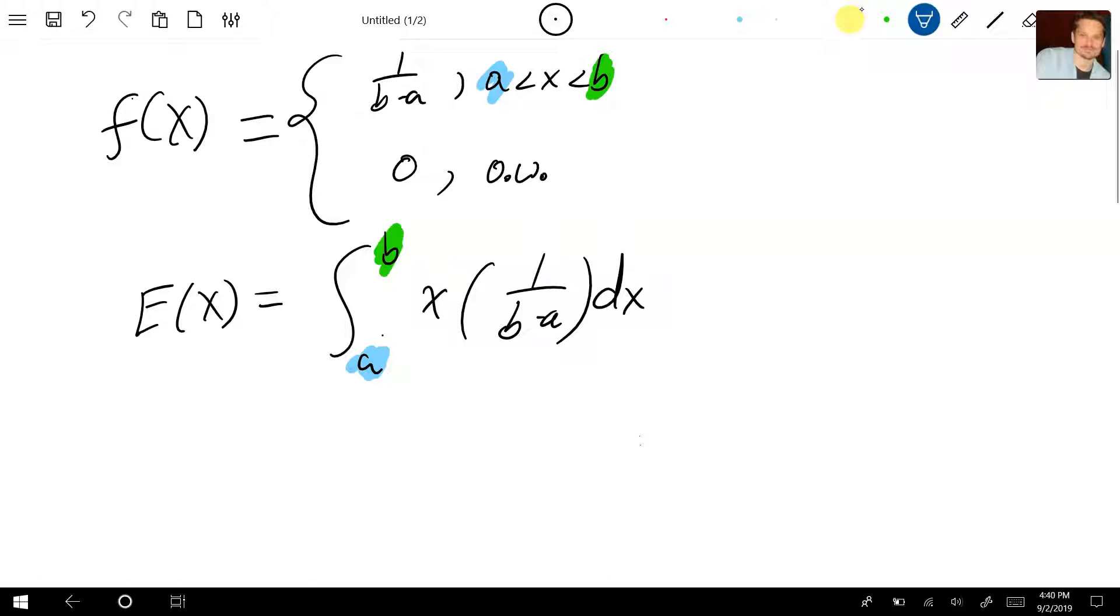Now you should know that when you look at this integral, the b and the a in this context are treated as constants, which means this expression right here can be factored from the integral. It's a constant value with respect to x, so you pull that out. And you're going to end up with 1 over b minus a and then the rest of the integral from a to b of x dx.